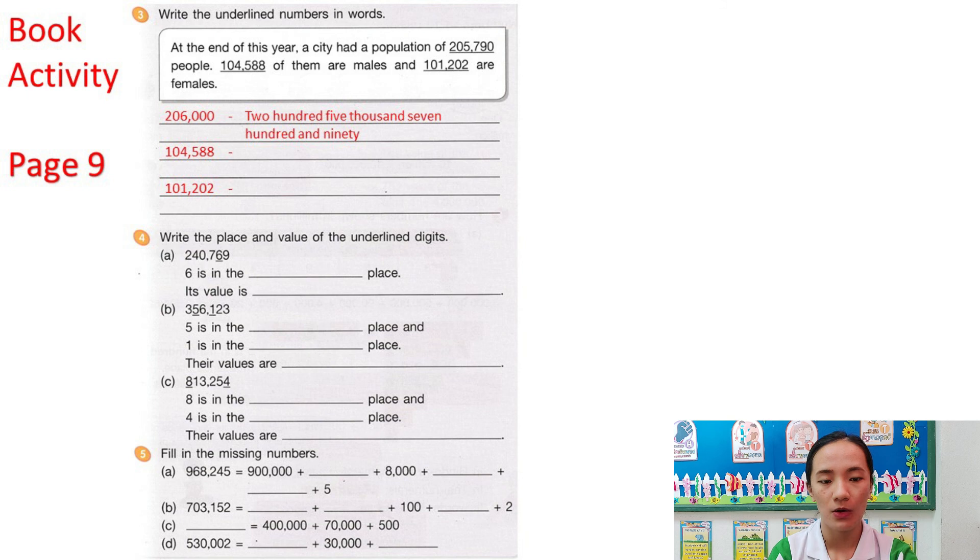Next, number 4. Write the place and value of the underlined digits. For example, letter A: the number 240,769. The underlined number is 6. Six is in the blank place. Its value is blank. So, the place value of 6 is tens and its value is 60.